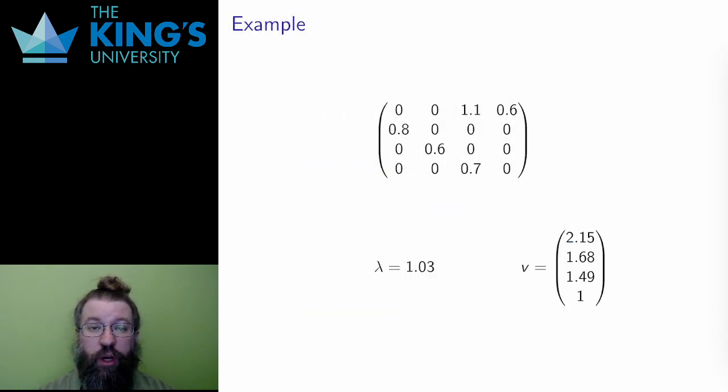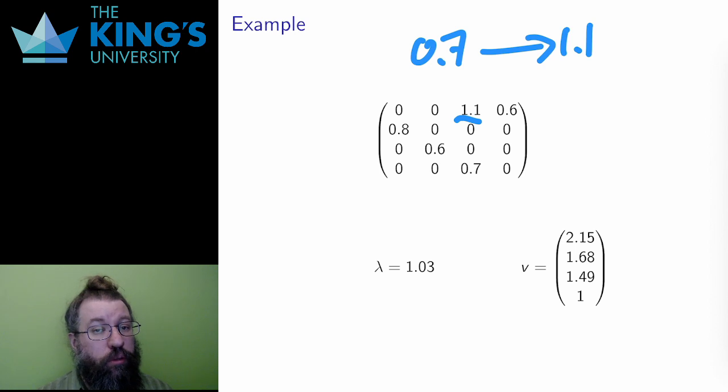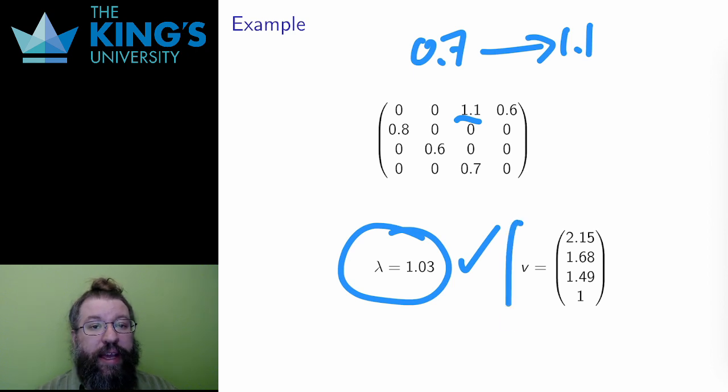The previous population was not viable. The eigenvalue showed that it would decline. Here, I've only changed one coefficient. The 0.7 fecundity of category 3 becomes 1.1. This means there are more new members of the population. Is this enough? Well, I look at the new eigenvalue, 1.03. This is enough, even if just barely. This population will now grow, and the age ratios have also been affected by this change.